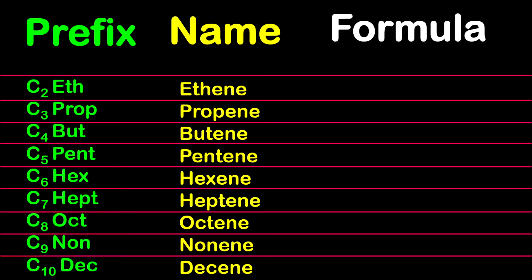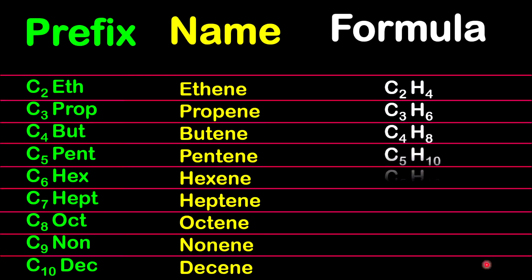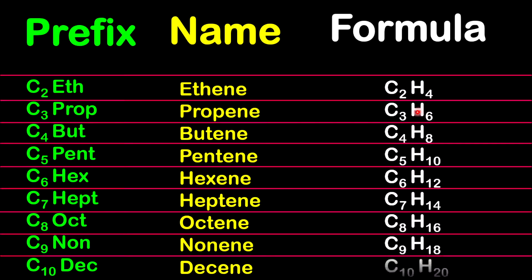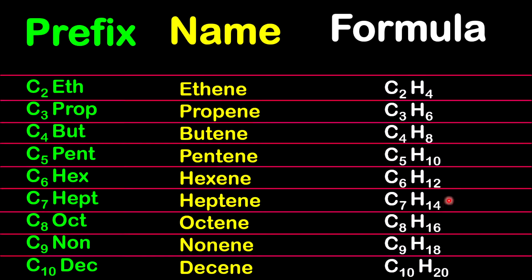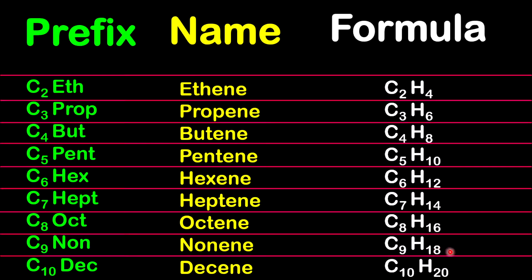Let's do a few more examples. For propene we have 3 carbons, therefore we must have 6 hydrogen atoms. For heptene, 7 carbons means 14 hydrogen atoms, based on the general formula CnH2n. For nonene, 9 carbons means 18 hydrogen atoms.